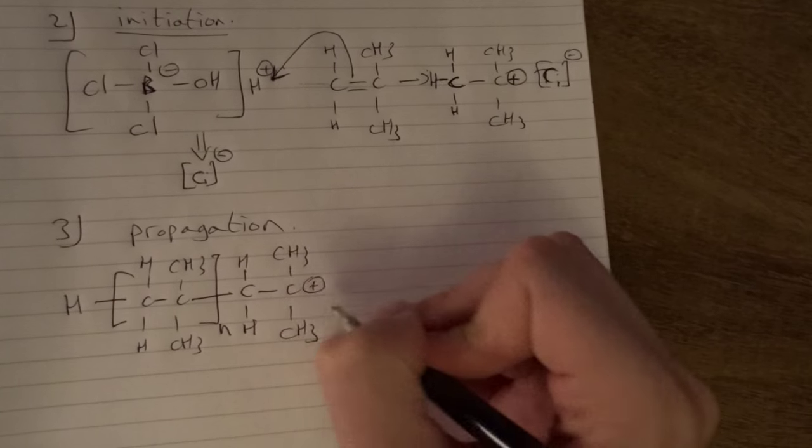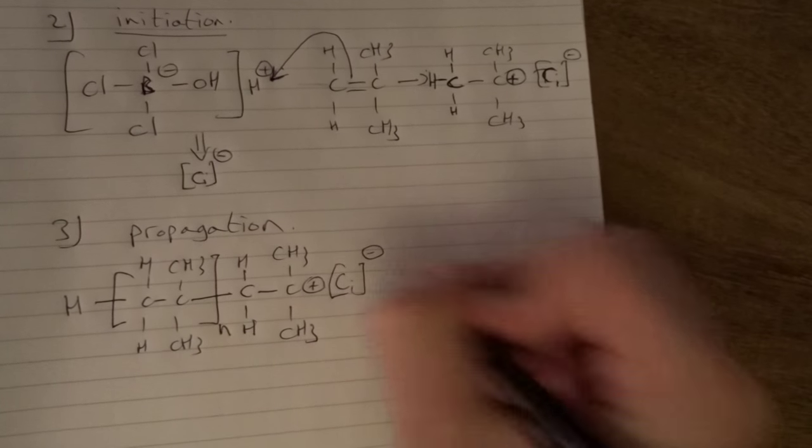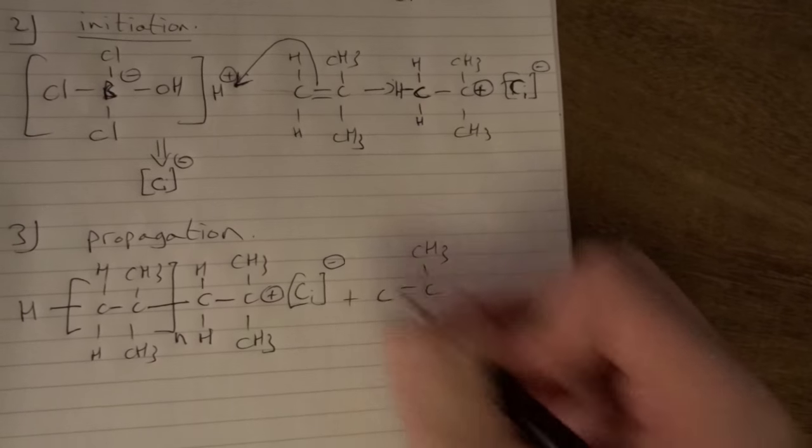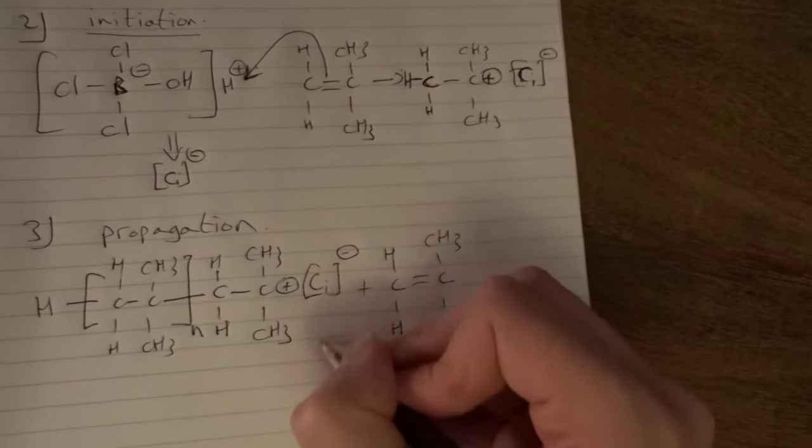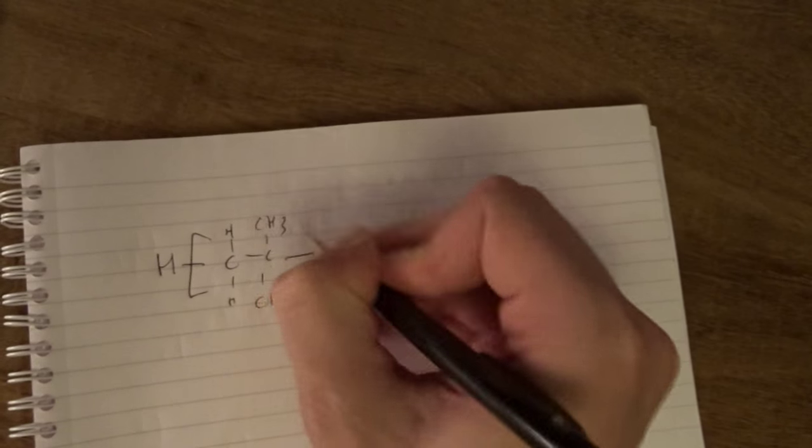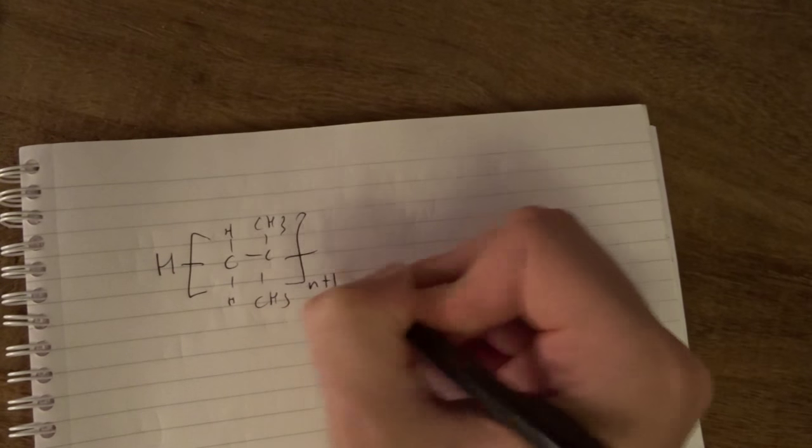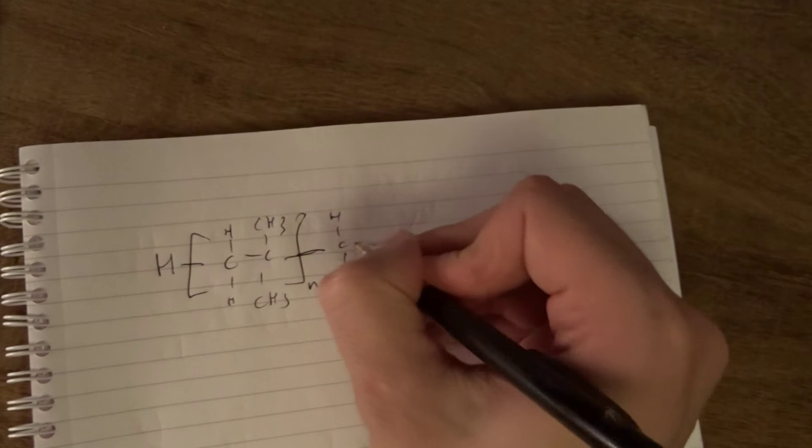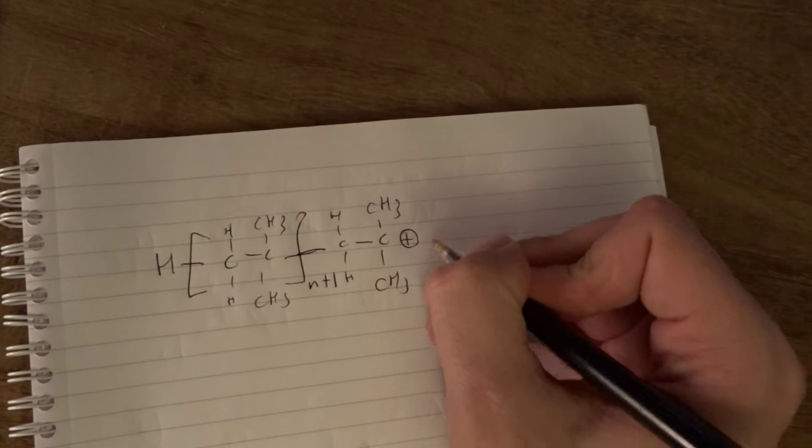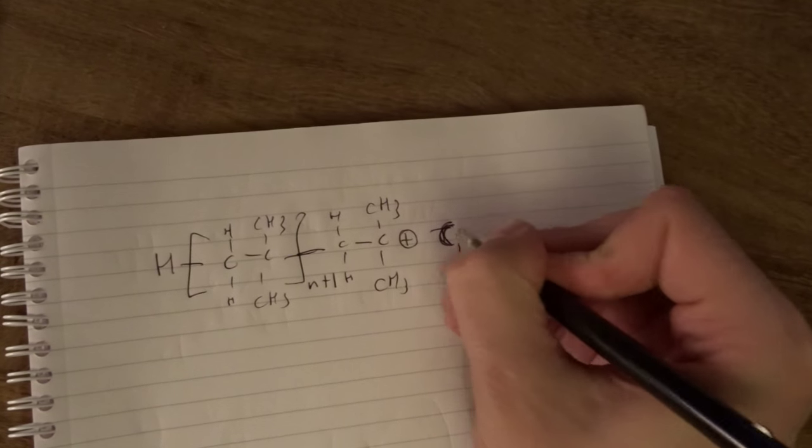So here is the positive charge with the counter ion and a new monomer like this. That will yield the new polymer. We draw again the structure like this and plus one, like the same in the free radical polymerization. It's quite similar with the positive charge and the counter ion.